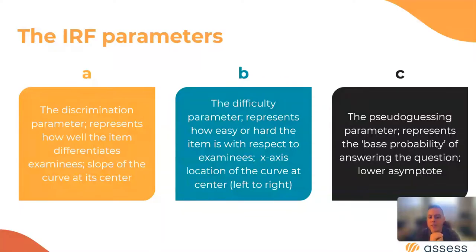So the a parameter represents the discrimination of the item, which determines how well it's differentiating examinees. And this is kind of like the slope of the curve at the center, so if it's got a steeper slope in that curve, it's got more discrimination. The difficulty parameter represents how easy or hard the item is with respect to the examinees, and this slides that whole curve left or right along that graph. So if the curve is centered on zero like it was in the example, that means it's appropriate for average examinees, but in a really easy question that curve would be slid all the way to the left. And the c parameter is called the pseudo guessing parameter or the guessing parameter, and it's the base probability of answering the question as a lower asymptote, like my example there with the 25% chance of guessing.